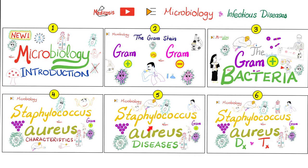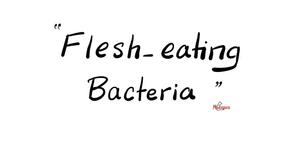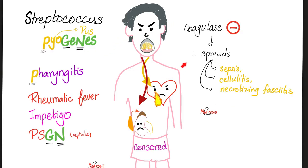Please watch these videos in order. When you hear in the news 'flesh-eating bacteria,' they are referring to cellulitis and necrotizing fasciitis caused by Streptococcus pyogenes. These are the most common diseases caused by Streptococcus pyogenes. We will elaborate on them in the next video, where we specifically discuss the diseases caused by strep pyogenes.